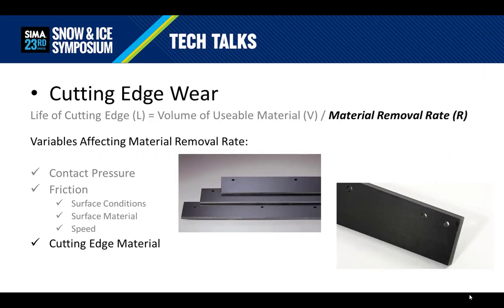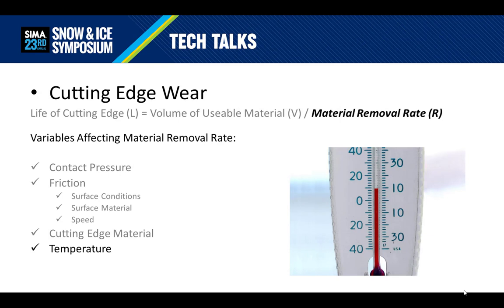One of the factors that you have a lot of control over is the cutting edge material. There are a wide array of materials available to contractors today — everything from rubber, to poly, to steel, to carbide are commonly available in the market. The last variable we'll consider today is temperature, or maybe climate. While we don't have a lot of control over temperature, we do have great detail on our climate and average temperatures. Temperatures can impact material removal rate greatly, so it's something we need to consider.